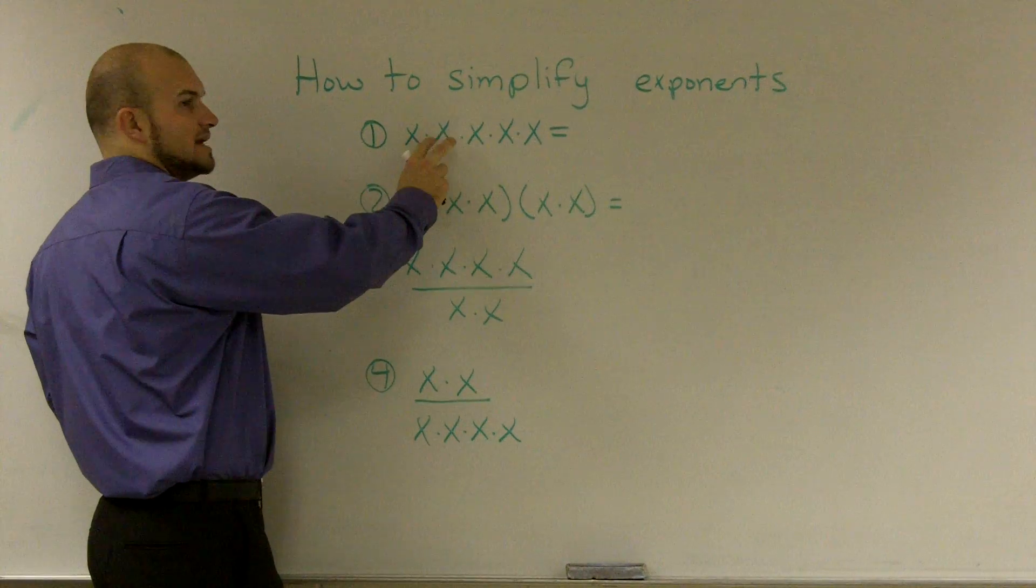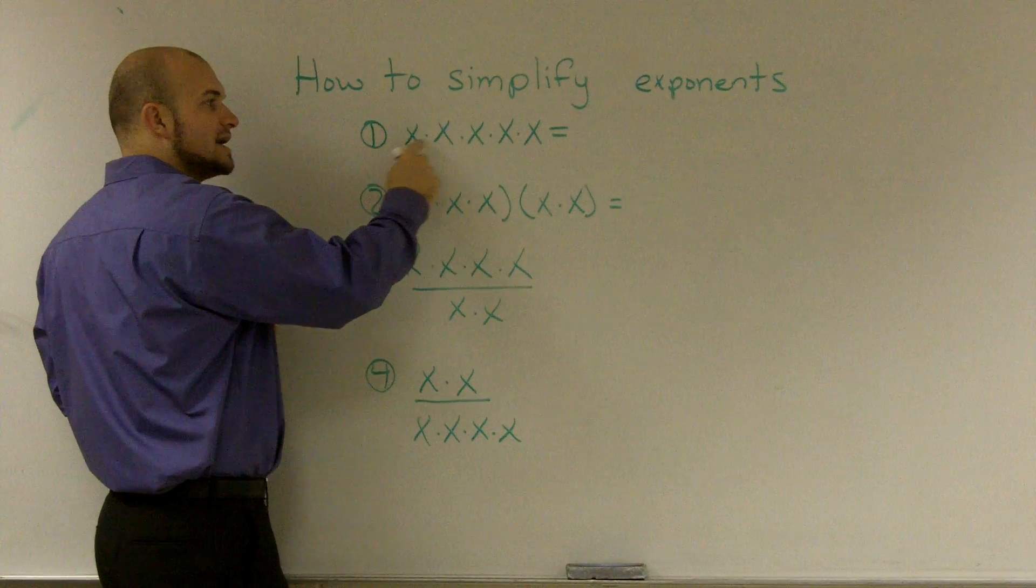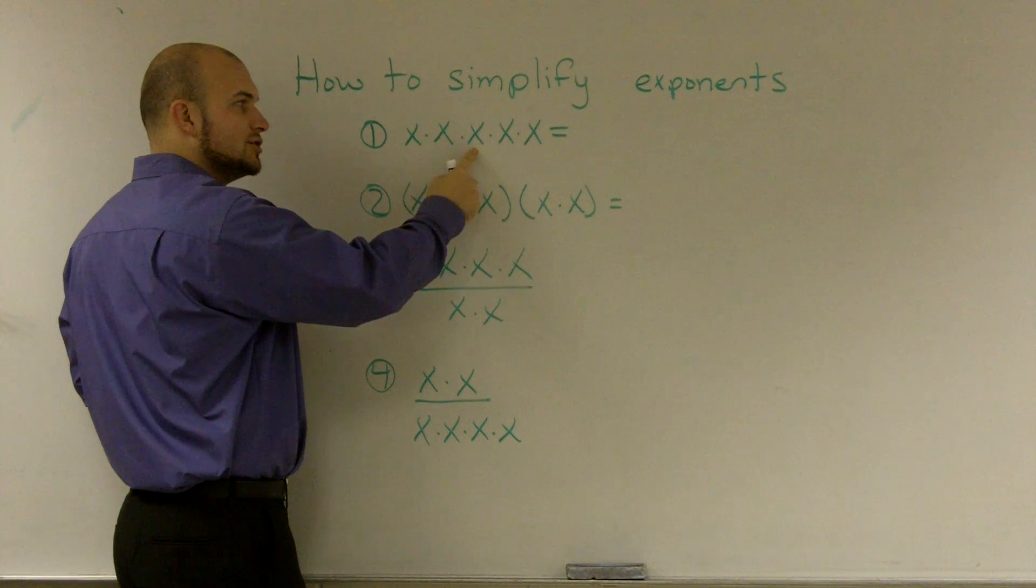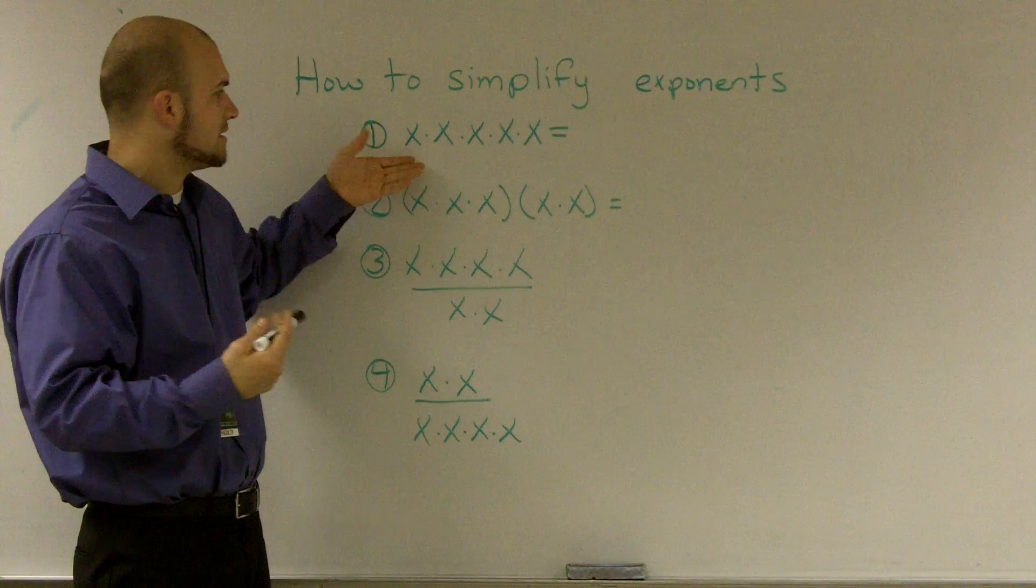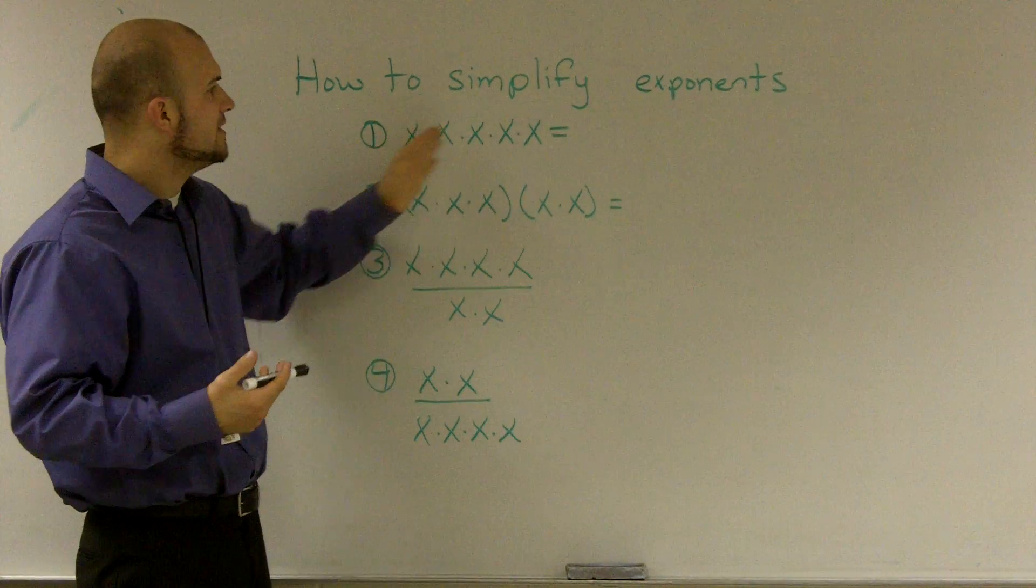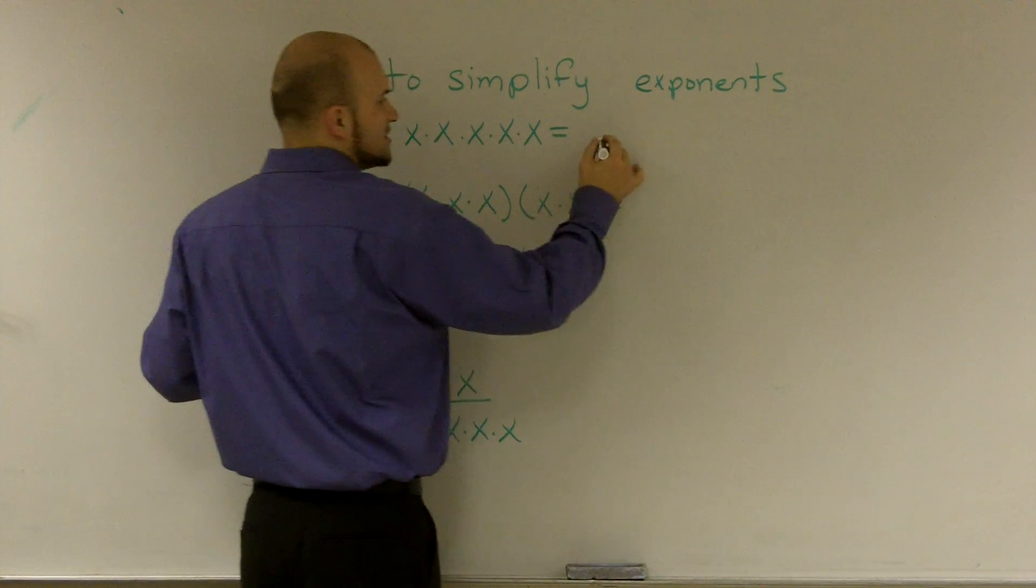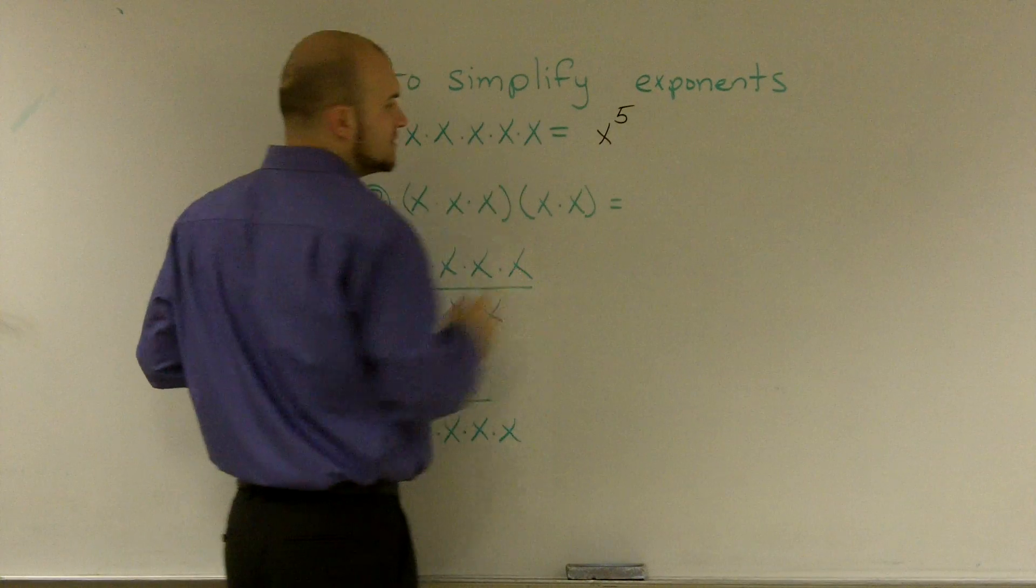So when we say x times x, that becomes x squared. And x times x times x would be x cubed. So when a variable is multiplying by itself five times, we're going to say it's x to the fifth power.